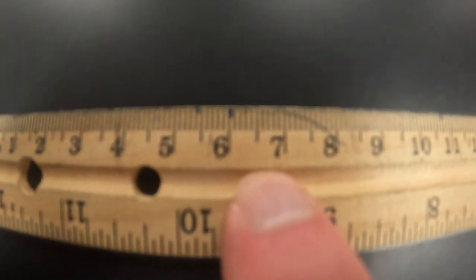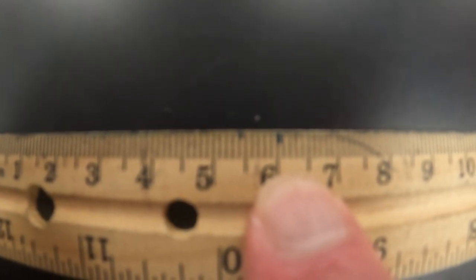Millimeters cut into tenths. So this is a centimeter mark and every small tick mark is one millimeter or one-tenth of a centimeter.